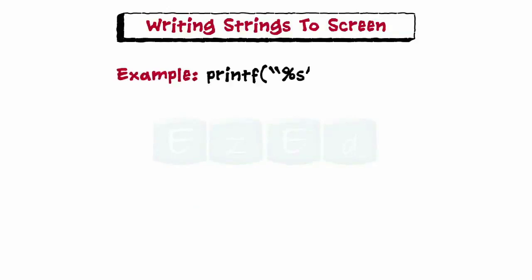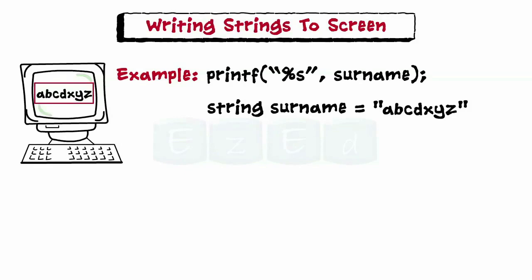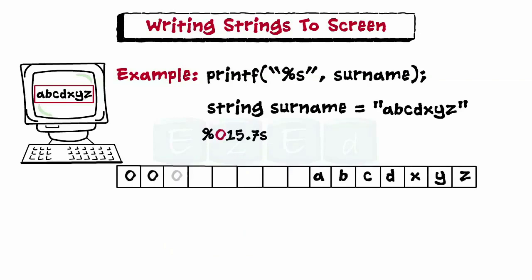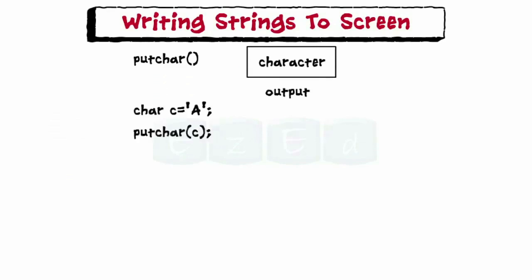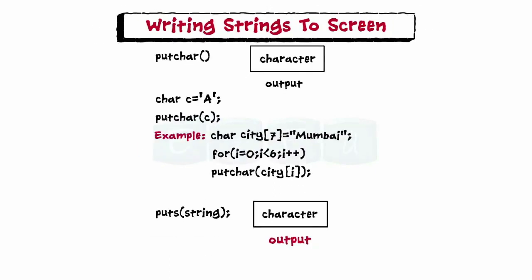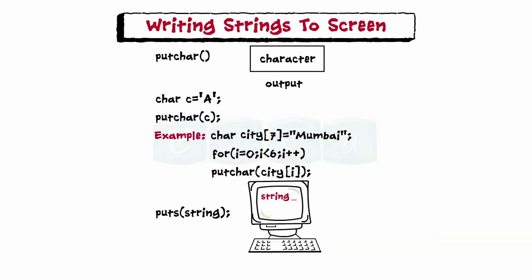Now let's learn to write strings to the screen. We can print a string using the printf function with the %s specification. We can also specify the precision — for example, displaying 7 characters out of a column width of 15. Using %-15.7 will display the text left-justified, while a 0 in the specification leads to padding with zeros. Like getchar, putchar is also used to output character values. Another way of printing strings is using the puts function, which takes a string as a parameter, displays it, and moves the cursor to the beginning of the next line.